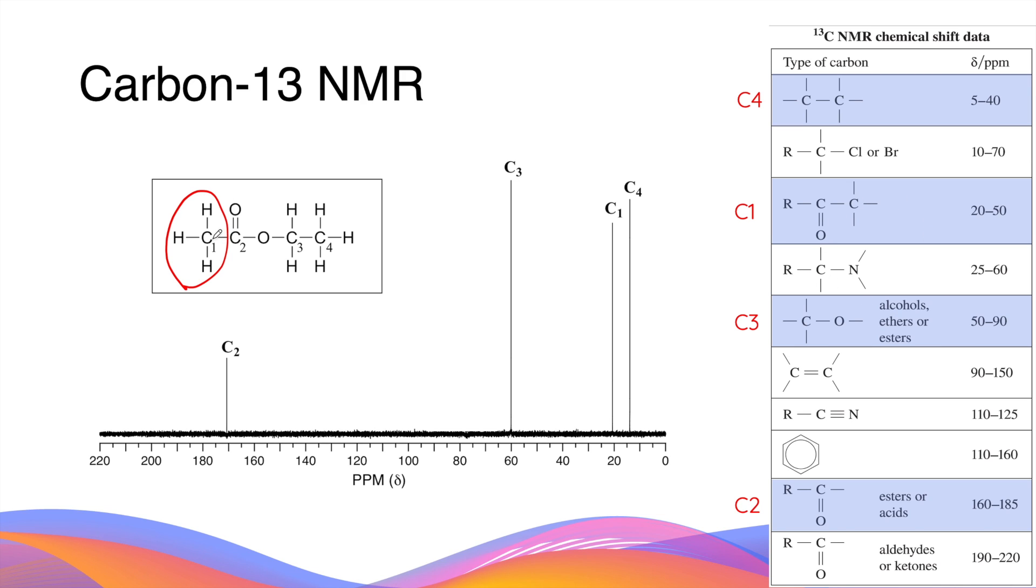Carbon-1 is positioned right next to a carbonyl carbon. And in the chemical shift data, this is given a range of 20 to 50. This is why C1 signal is on the far right hand side of the spectrum.